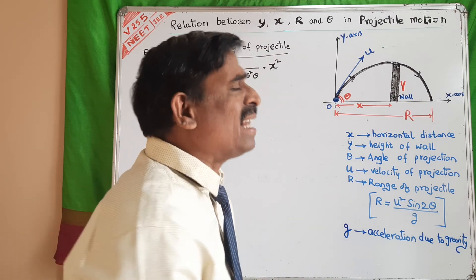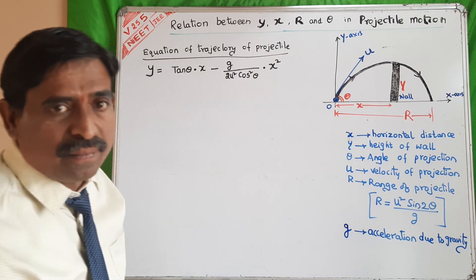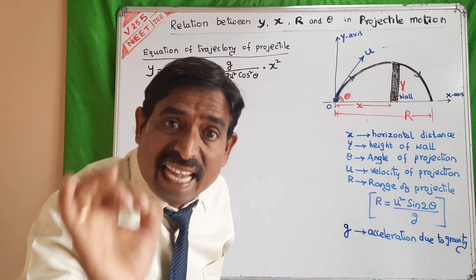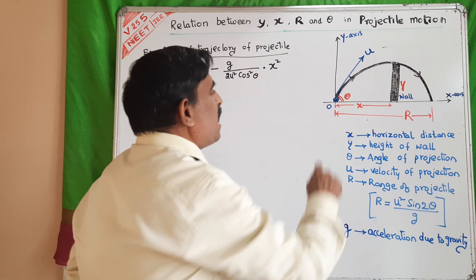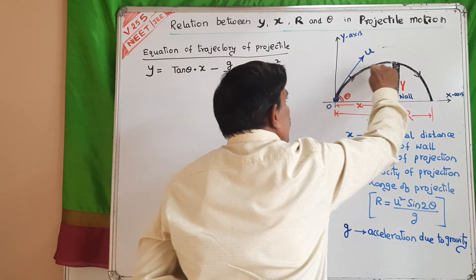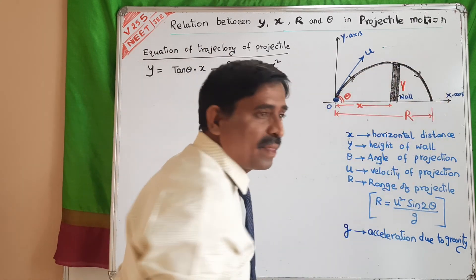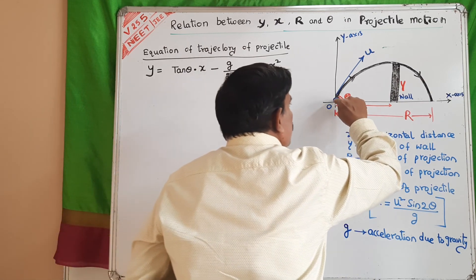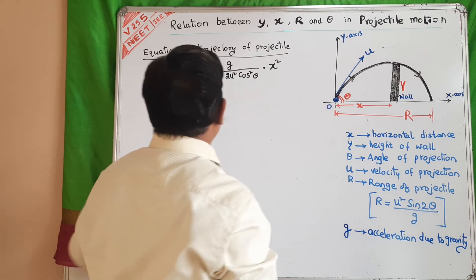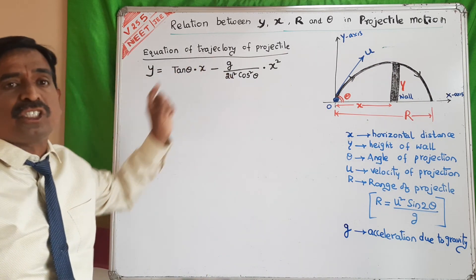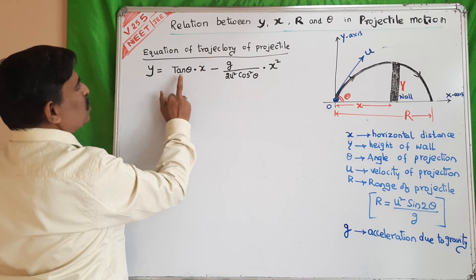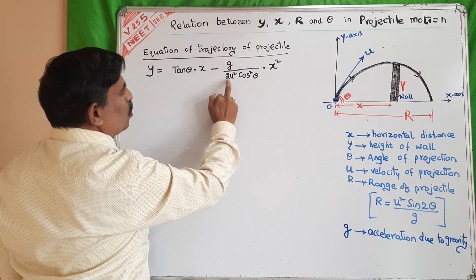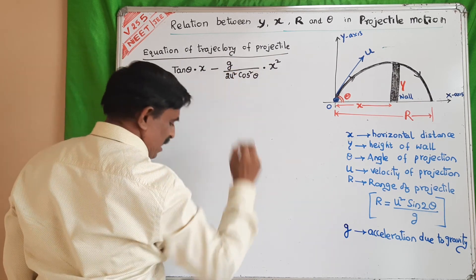Regarding the projectile motion, the equation of trajectory — trajectory means the path followed by the projectile. We have an equation: y is equal to tan theta into x, minus g by 2u² cos² theta, into x².